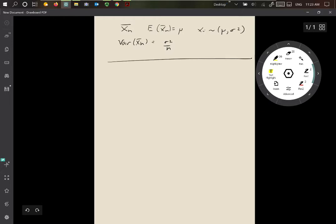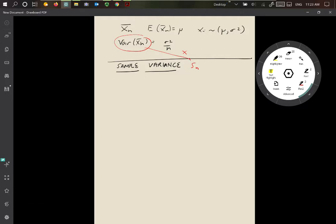So far so good. I'm now going to introduce a different quantity called the sample variance. The sample variance is denoted by the term Sₙ, and you have to remember that the sample variance is not the variance of the sample mean. These two are not the same, these are different things. This is the variance of the sample mean.